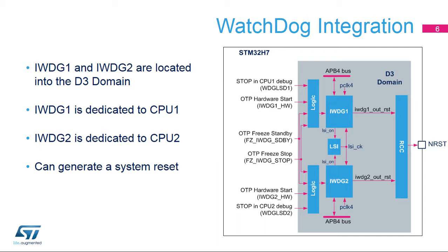The control of the behavior in stop or standby mode is common for both Independent Watchdogs. When OTP Freeze Stop is activated, the Independent Watchdogs are frozen when the system is in stop or standby mode. When OTP Freeze Standby is activated, the Independent Watchdogs are frozen when the system is in standby mode. Both watchdogs are connected to the APB4 bus of the D3 domain.